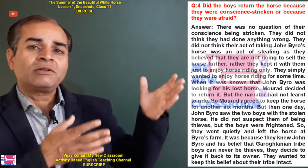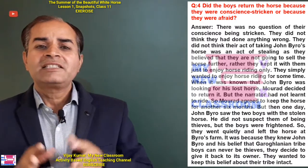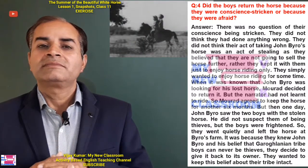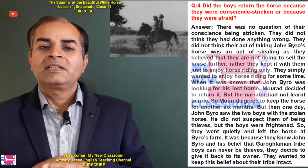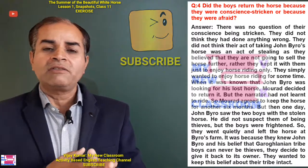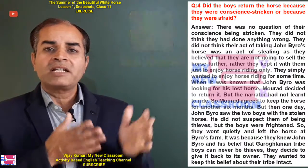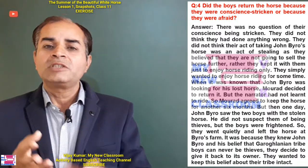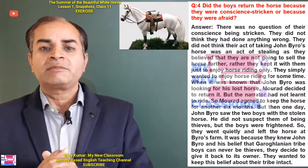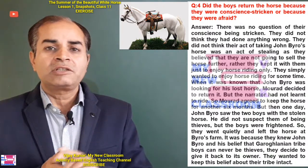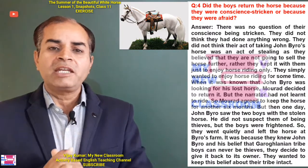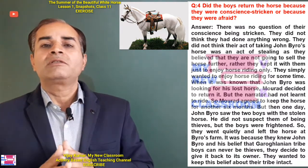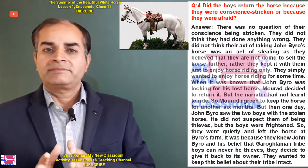As they believed they were not going to sell the horse — rather they kept it with them just to enjoy horse riding. They simply wanted to enjoy horse riding for some time. When it was known that John Byro was looking for his lost horse, Morad decided to return it. When they felt that John Byro had started asking around, they thought, let's return it now, it has been many days. But the narrator had not yet learned to ride, so Morad agreed to keep the horse for another six months.